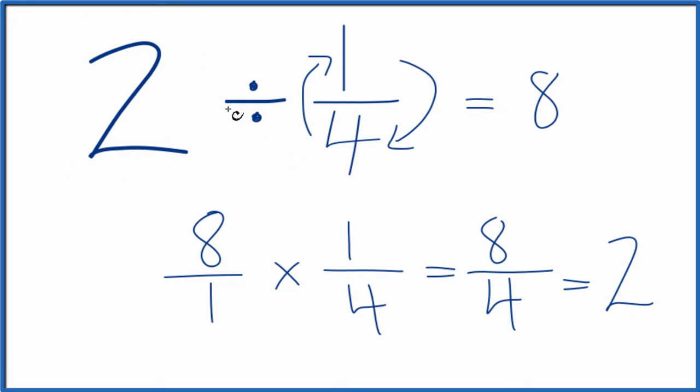So when we divide two by one-fourth, we get eight. When we multiply eight by one-fourth, we get two. This is Dr. B. Thanks for watching.